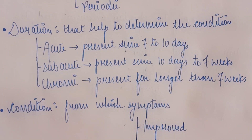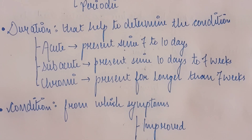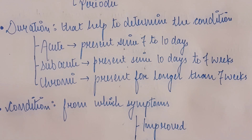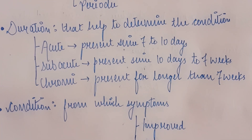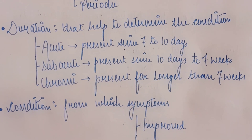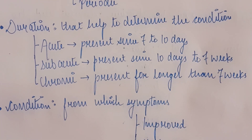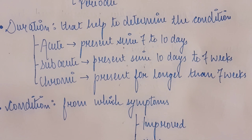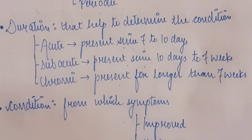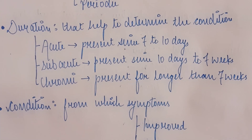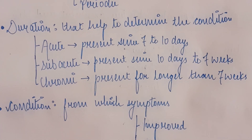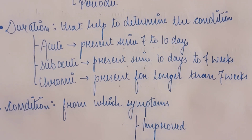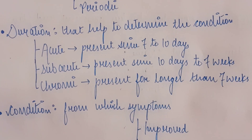So on the basis of duration, the condition is divided into acute, sub-acute, and chronic. The duration also depends on how long the pain has been present — a prolonged period of time, a short period of time, or if it happens sometimes and not others.